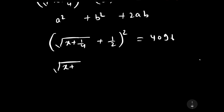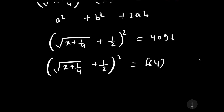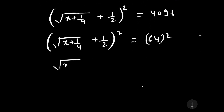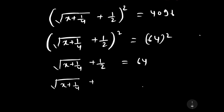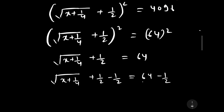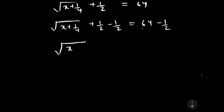Further we can write it as x plus 1 by 4 plus 1 by 2, whole square, equal to 4096, which is the square of 64. It means it can be written as 64 whole square. Taking square root on both sides, under root x plus 1 by 4 plus 1 by 2 is equal to 64. Adding minus 1 by 2 on both sides, under root x plus 1 by 4 is equal to 64 minus 1 by 2.